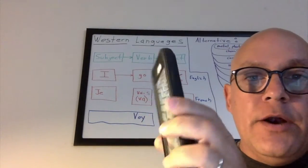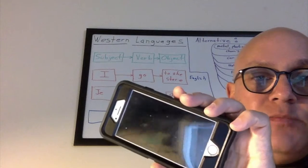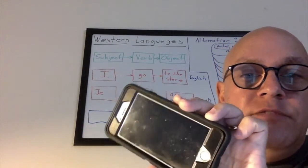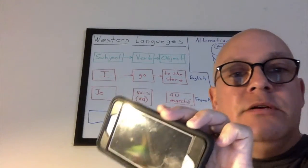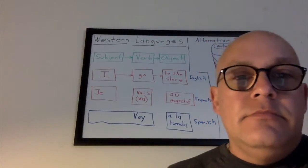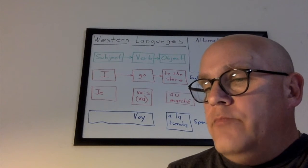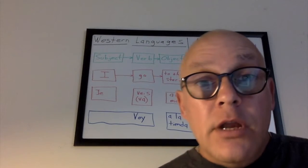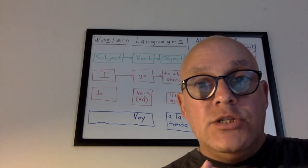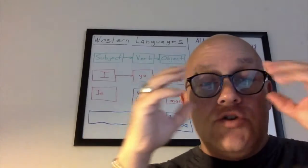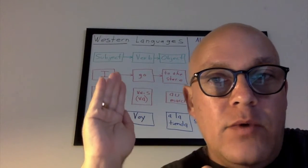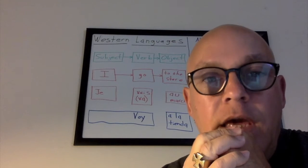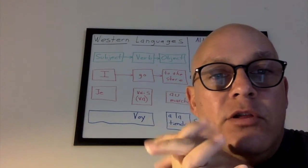I have a phone here. Let's say that's the subject. Let's say the object is this button. 'This phone has a white button' — subject, verb, object, 'has.' Let's see if we can get to some alternative ways of thinking, and I'm going to show you with this illustration that the way we think in western languages — subject, verb, object — is not necessarily the only way to think.